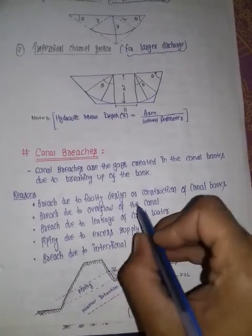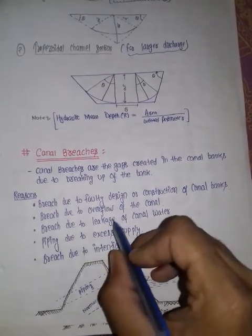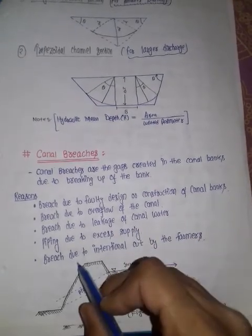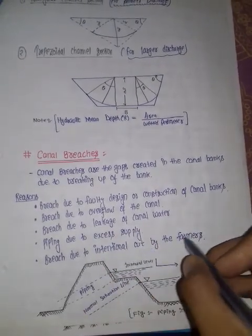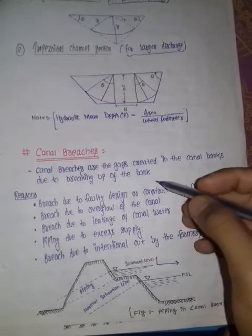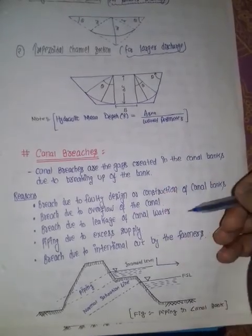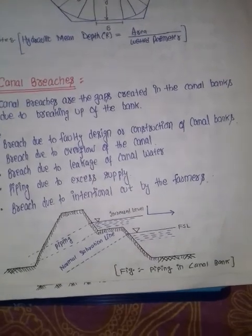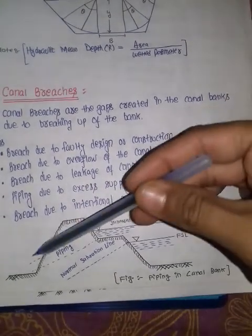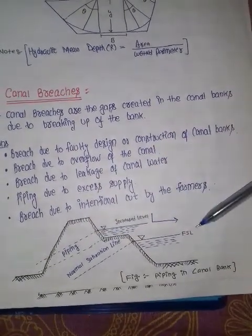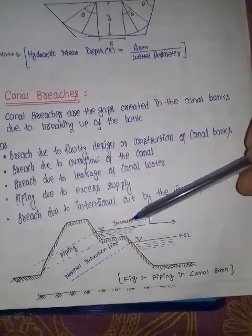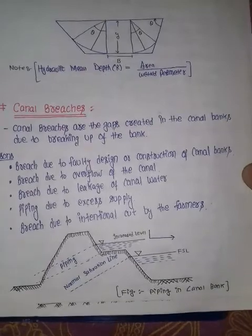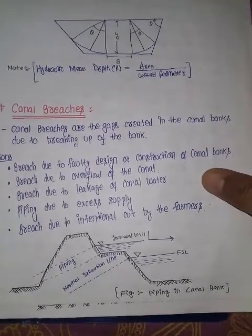Breach due to the overflow of the canal, breach due to the leakage of the canal water, piping due to the excess supply, and breach due to the intentional cut by the farmers. We will discuss each one in detail. In the figure for the representation of the canal bank, this is the full supply level and this is the increased level.